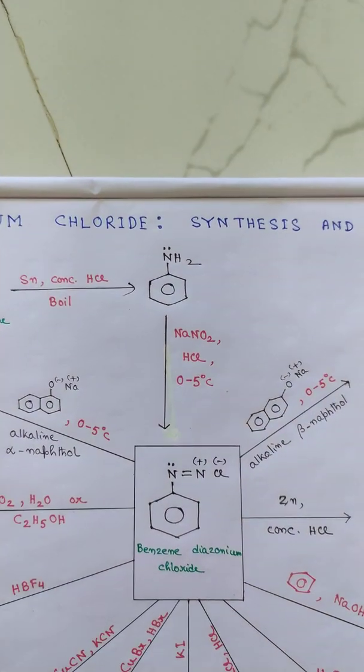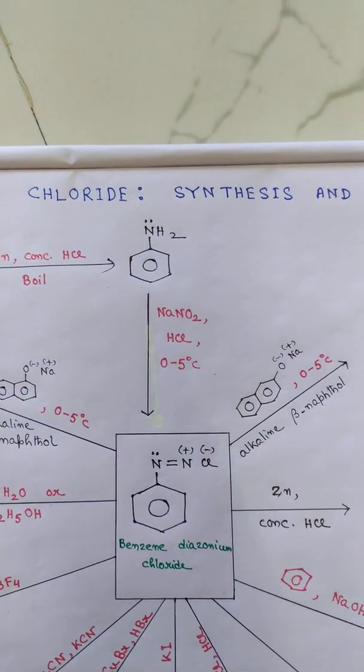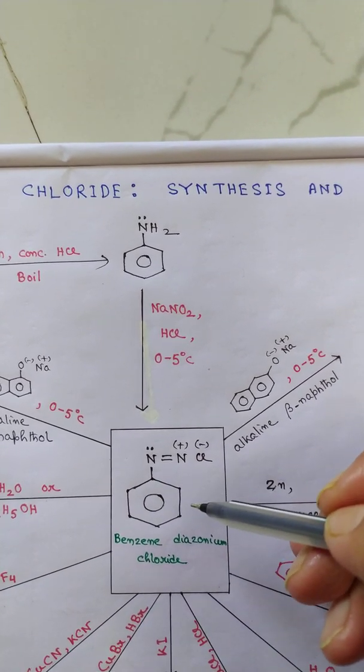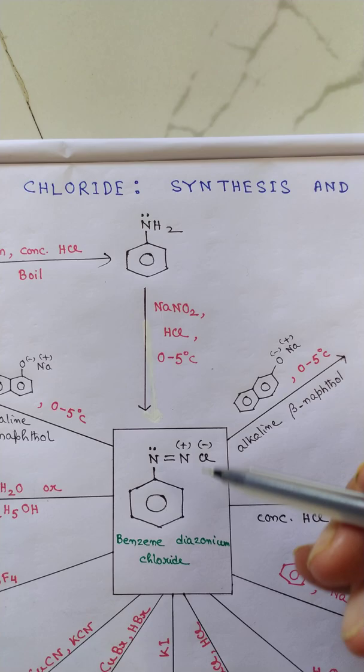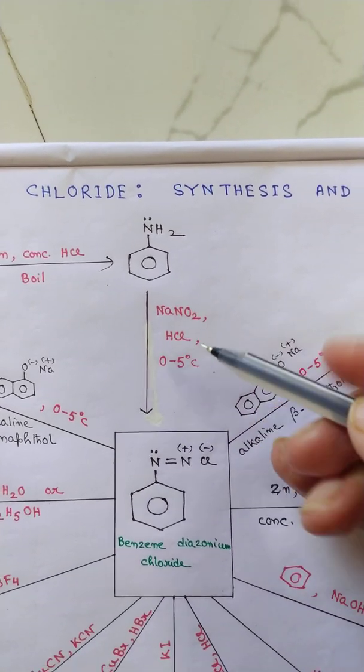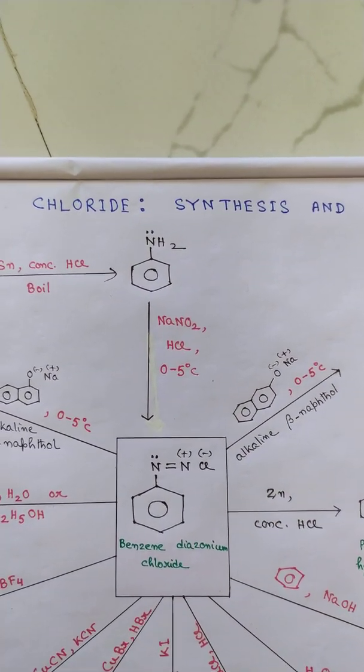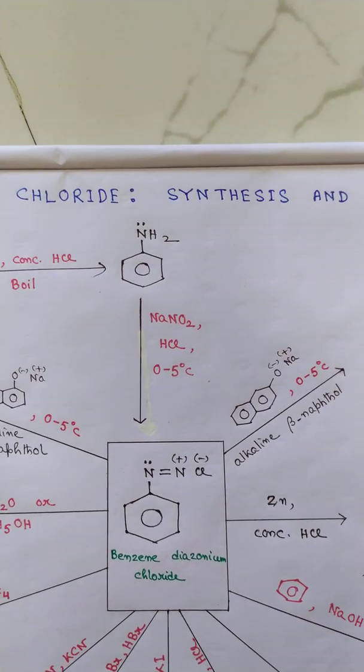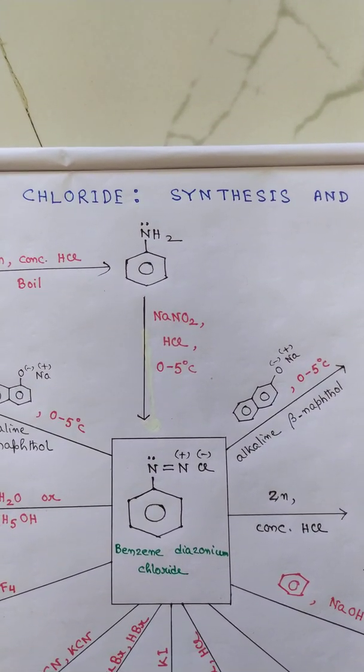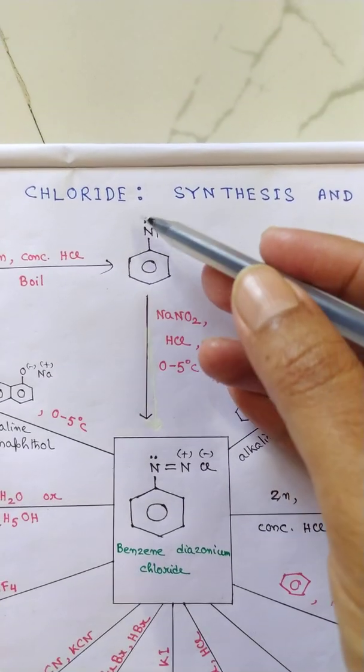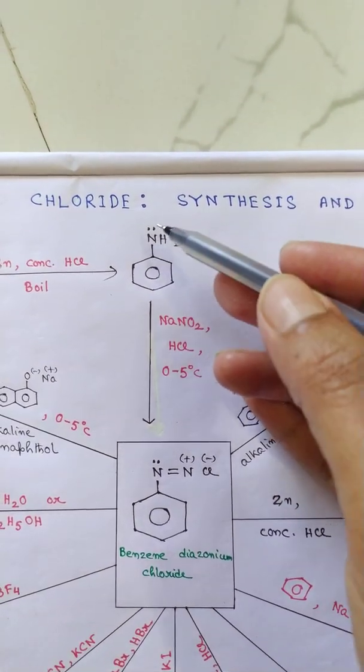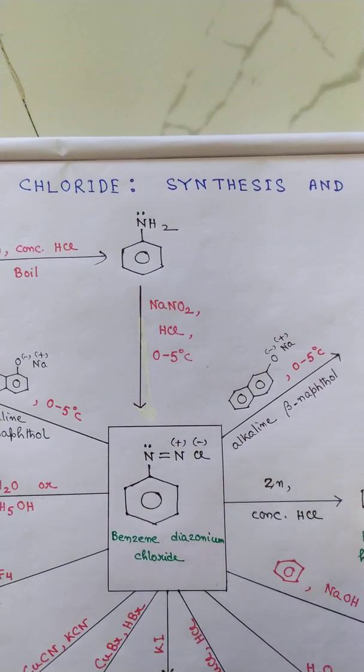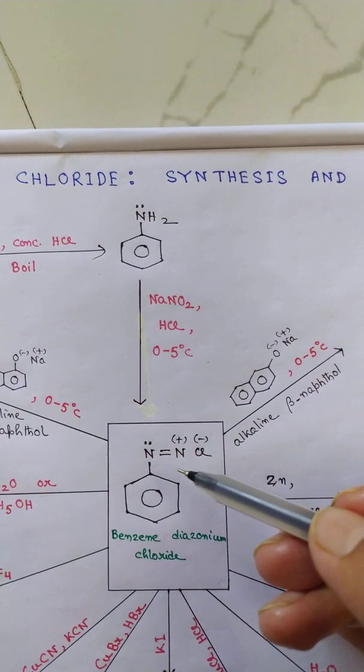Now NaNO2 plus HCl gives the reaction: NaNO2 plus HCl arrow HNO2 plus NaCl. That is the nitrous acid and it reacts with the amine group and it gives benzene diazonium chloride.